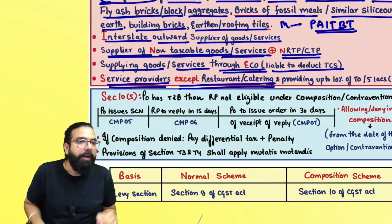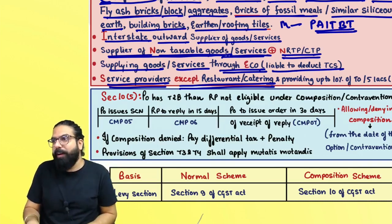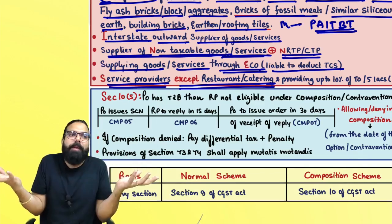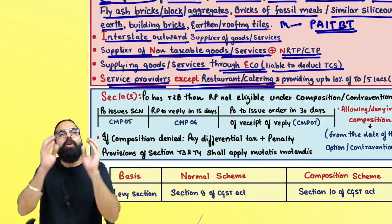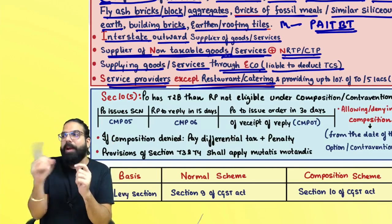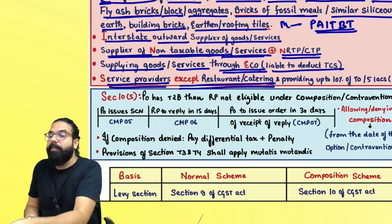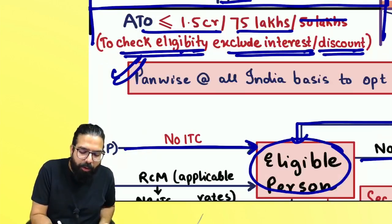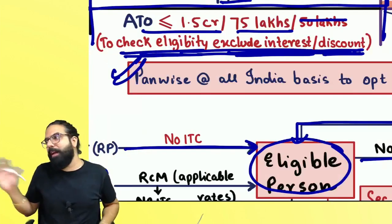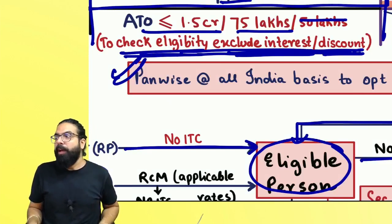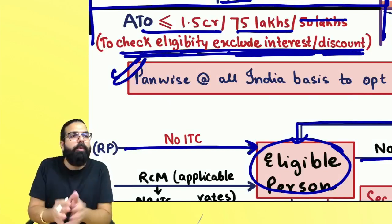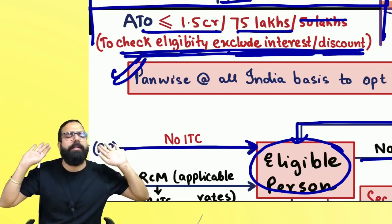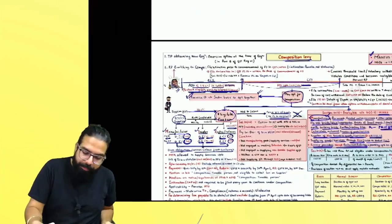Now, someone asked: when we give money and receive interest, we become a supplier of service — does that make us ineligible? The government clarified: even if you give money and receive interest, you become a supplier of service, but just because you have interest income you will not become ineligible for composition scheme. Therefore, when checking eligibility in aggregate turnover, exclude interest. And when paying tax on turnover, also exclude interest. Wherever you see interest, close your eyes and ignore it.